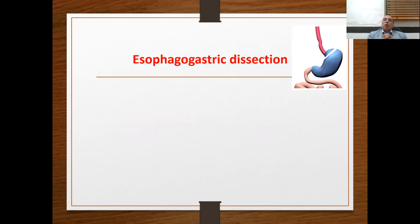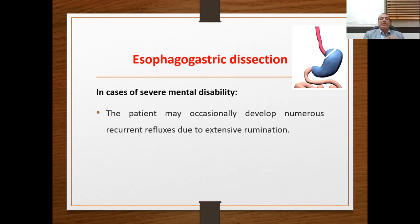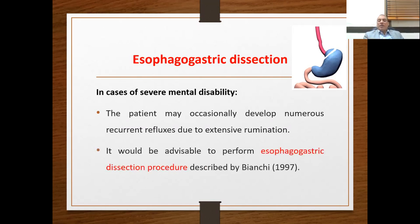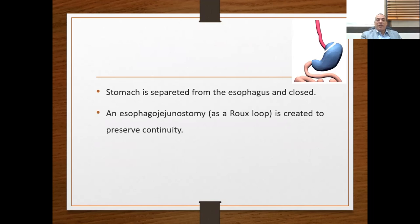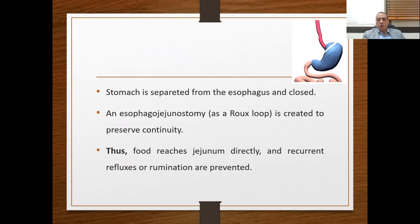Esophagogastric dissociation: complete separation of the esophagus from the stomach is indicated in severe cases of mental disability where patients develop numerous recurrent refluxes and extensive rumination. The procedure involves complete separation of the esophagus and stomach, followed by a Roux-en-Y anastomosis between the esophagus and the jejunum to restore gastrointestinal continuity. Food reaches the jejunum directly and recurrent refluxes or ruminations are prevented.